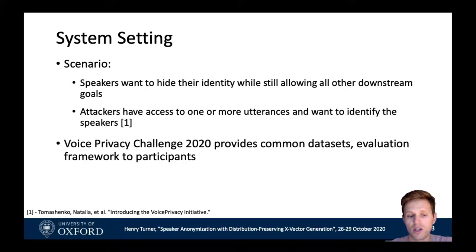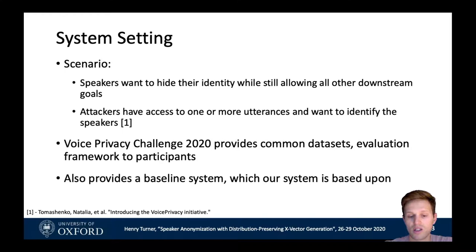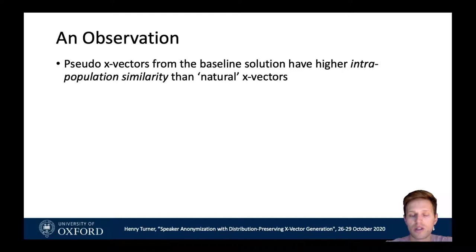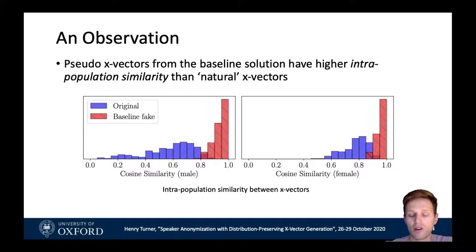The challenge also gives us a baseline system which we build upon and improve. Our work started with an observation about the outputs from the baseline system: the pseudo x-vectors created by the baseline system have much higher intra-population similarity than natural x-vectors. An x-vector is a 512-length vector extracted from a voice sample which can be used to identify a speaker. When we analyze the similarity of these x-vectors, we find that the fake x-vectors generated by the baseline system are all much more similar to each other than you would find in a natural population.